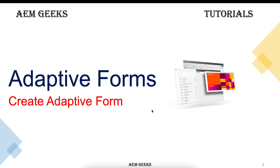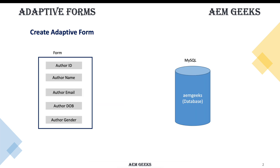With the last couple of tutorials, we are done with the basic setup of adaptive forms in AEM, and now we are ready to create our first form. This form will have fields for author ID, name, email, date of birth, and gender, and we will be submitting that data to a MySQL database. Using this form, we'll understand all the basic concepts of adaptive forms.